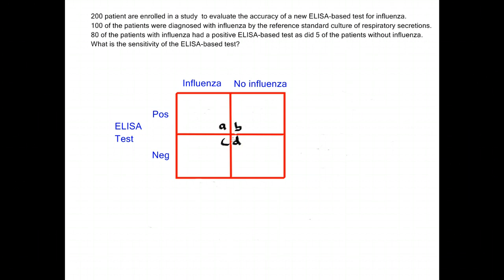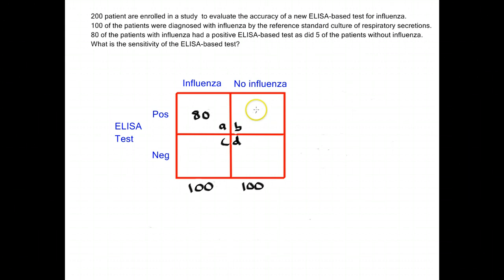There were 200 total patients enrolled in the study, and 100 of them were diagnosed with influenza, so the total number of patients with influenza is 100. Because there were 200 total patients, I'll also have 100 patients who didn't have influenza. 80 of the patients with influenza had a positive ELISA test, so 80 goes in that box. Five people without influenza also had a positive ELISA-based test, so five goes there. 100 minus 80 is 20, and 100 minus 5 is 95. Now I've got my two-by-two table filled in and I can make a calculation of sensitivity.